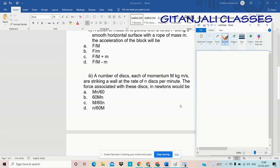Now third question: a number of discs each of momentum M kg meter per second are striking a wall at the rate of N discs per minute. The force associated with these discs in Newton we have to find out. Now we all know that any object of mass M which is in motion is said to have momentum. So momentum means object due to its motion.